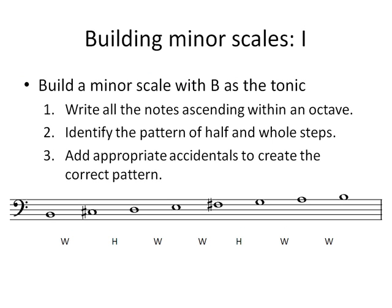To create the whole step above the tonic B, I need to raise the C to C sharp. That has the added benefit of solving the problem between scale degrees two and three. I'm also going to raise the F to F sharp, which creates a whole step between the subdominant and the dominant, and results in a half step between the dominant and the submediant.